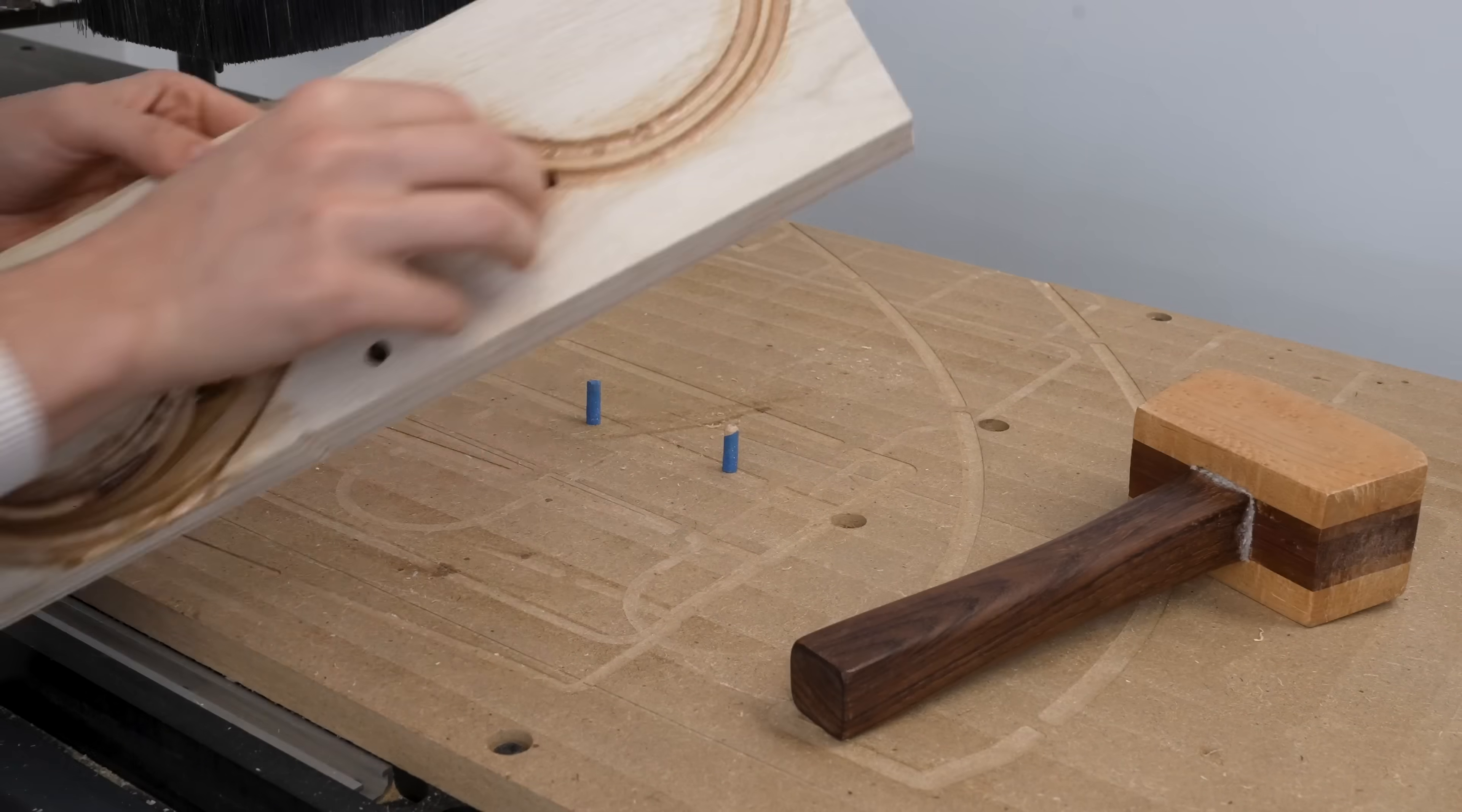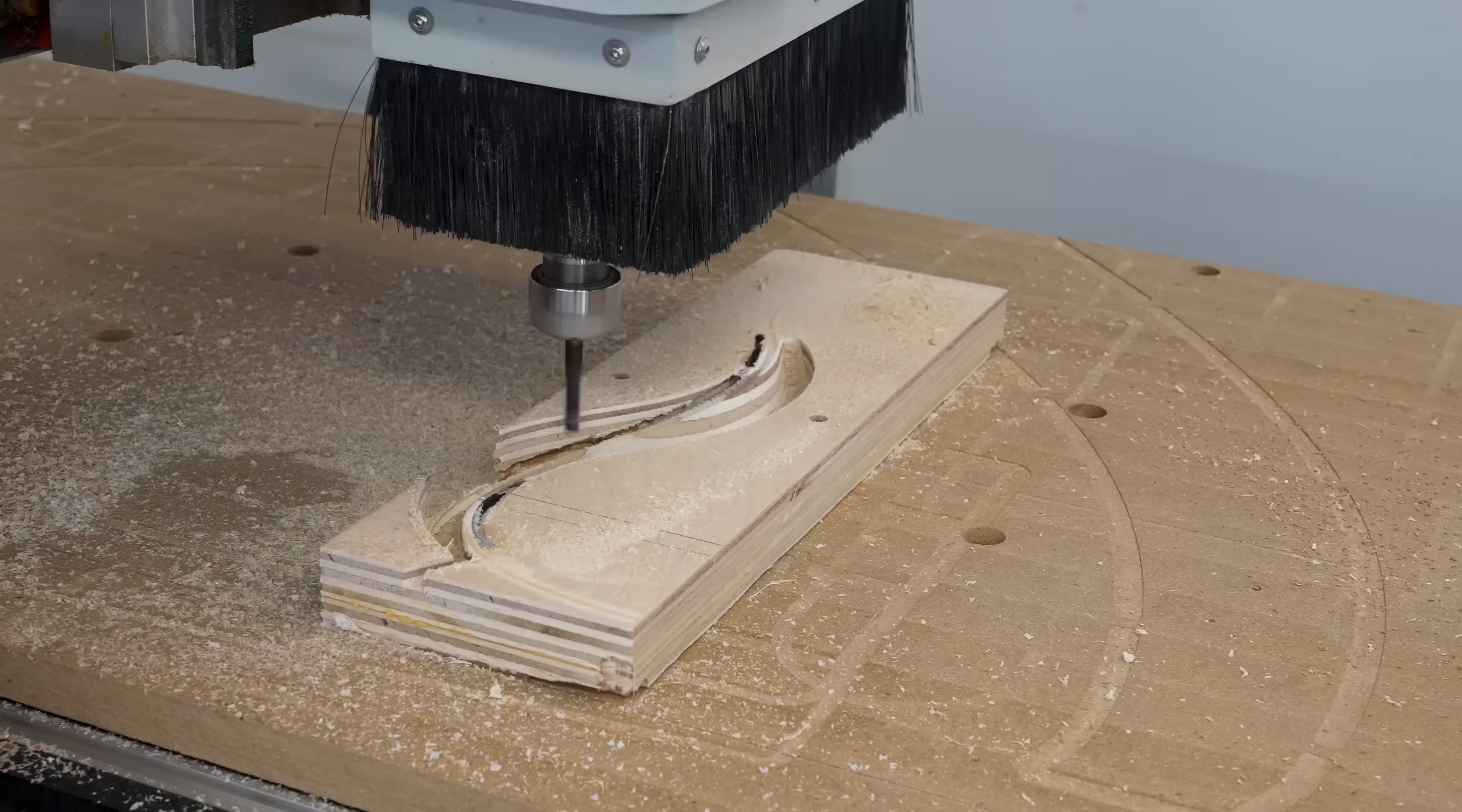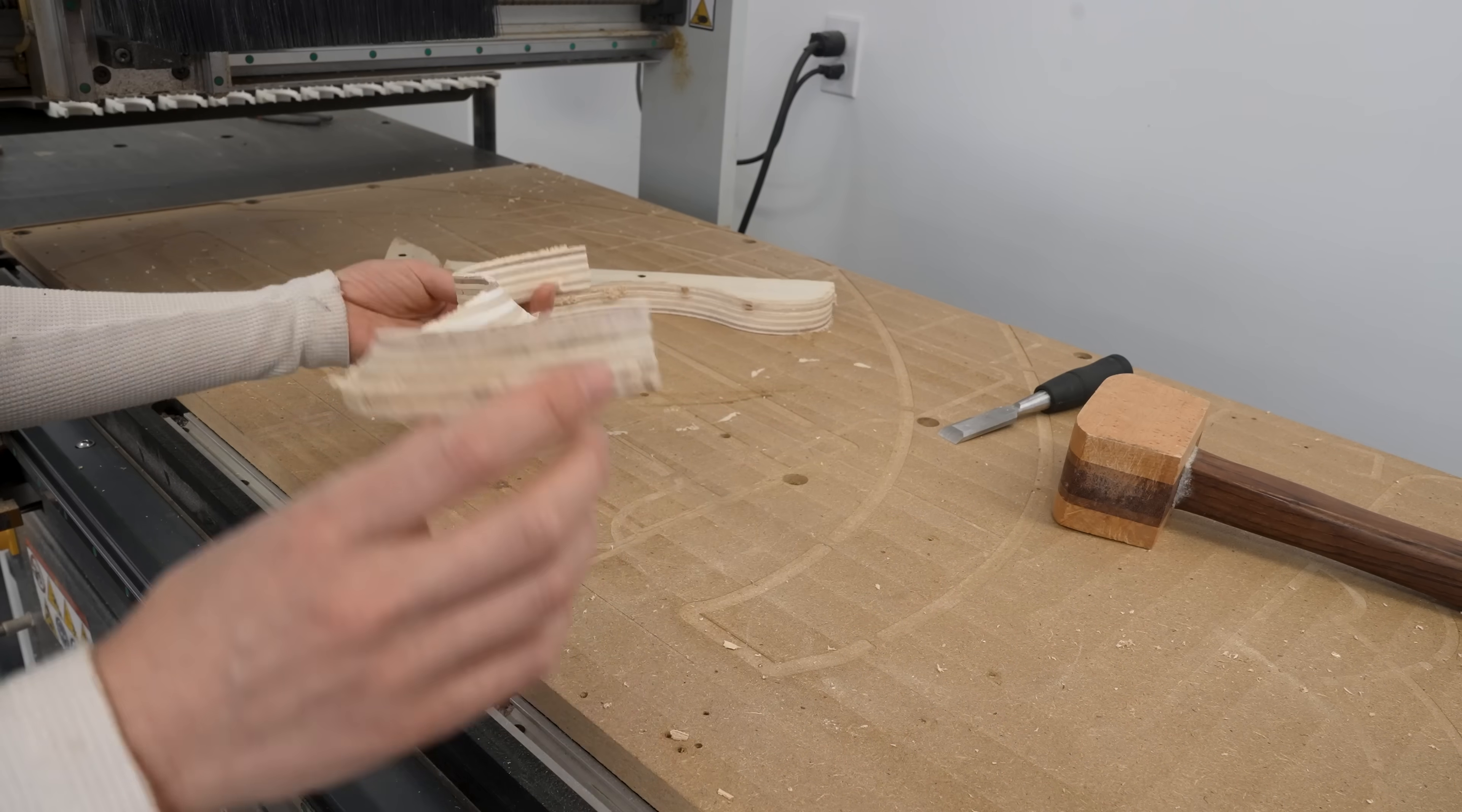The way I modeled this to be flipped over is using dowel holes, so you'll see that there are two centered holes that I drilled all the way through the piece and into the spoil board below it. And then once the first side is cut, I can stick dowels into those holes and flip it over so that the milling operation aligns on the second side. And once that was done, I could pop it off the machine and cut the tabs and see how it looks.